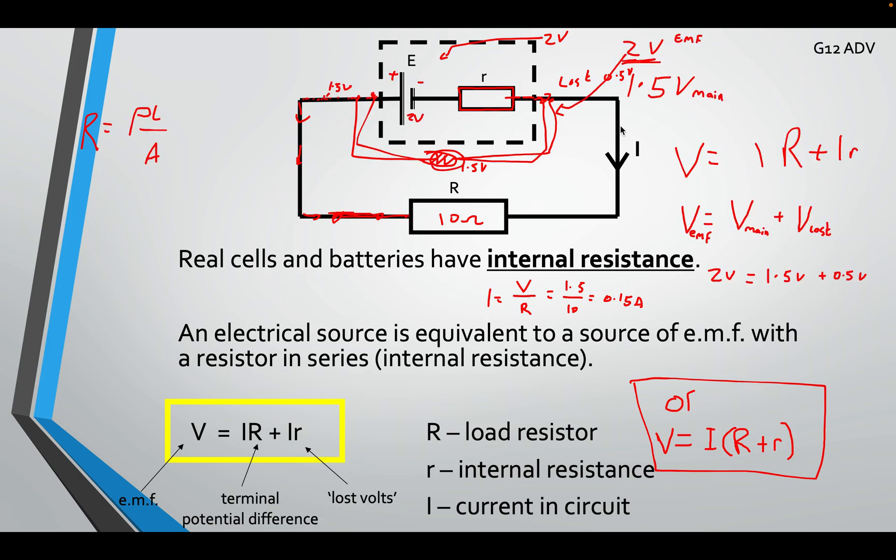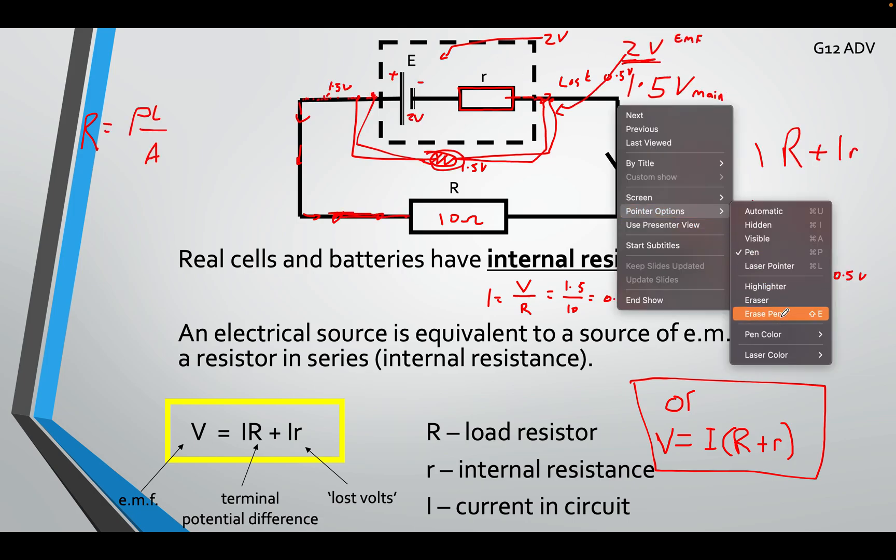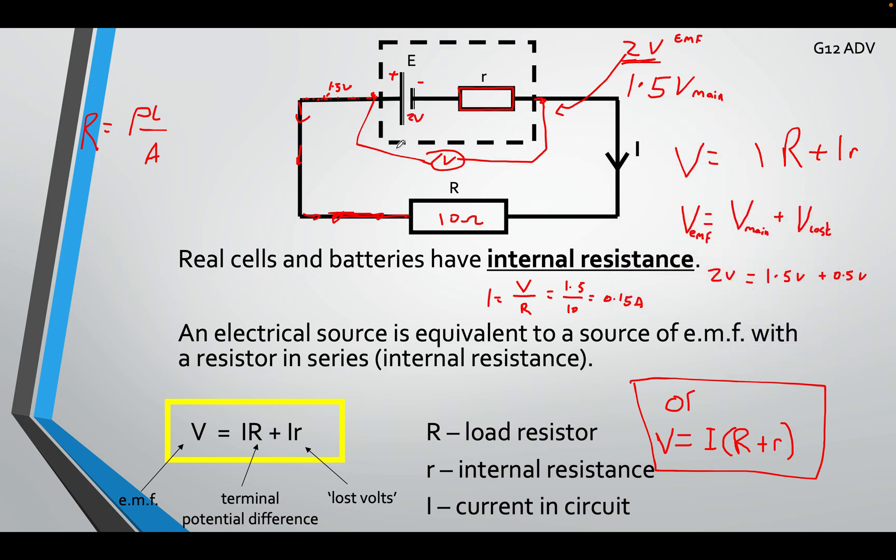So I actually went and solved this with you in the class. Let me erase my writing over here. I already solved it with you. If I wanted to find the lost volts, I can just do the EMF, which is what the battery has, and the main, which is what the voltage told me, plus whatever my lost volts was. My EMF, as I mentioned, was 2 volts.